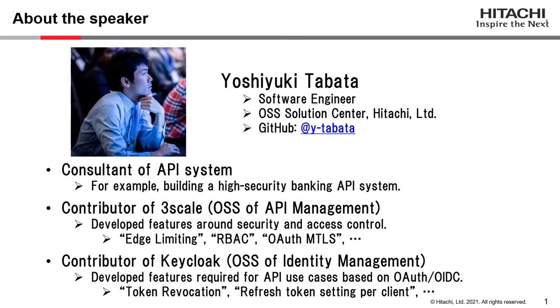Let me introduce myself. My name is Yoshiyuki Tabata and I'm a software engineer at the OSS Solution Center of Hitachi. I mainly work as a consultant for API systems and I've built various API systems, for example, a high-security banking API system. I'm also a contributor to 3Scale, which is an OSS for API management. I've developed features around security and access control, such as rate limiting, role-based access control, and OAuth mTLS.